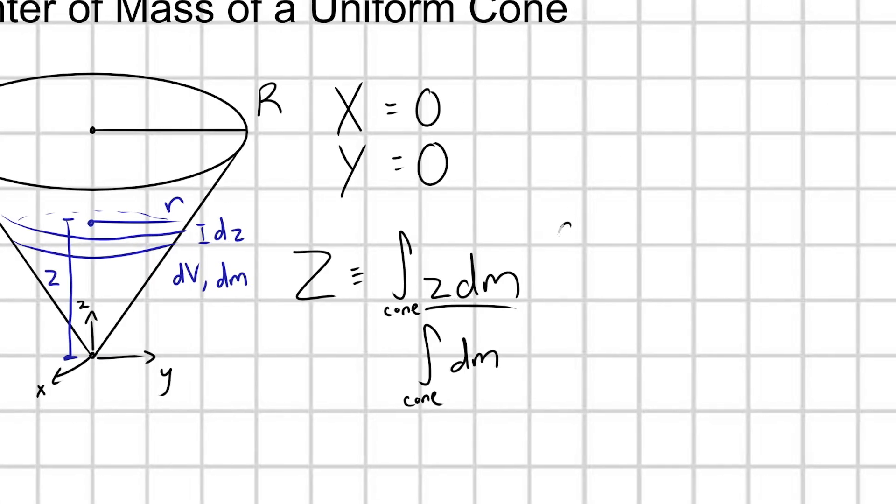We have that dm is going to be equal to, well, how do you find the mass of an infinitesimal mass element? You take your volume density rho times the infinitesimal volume that each of your mass elements is going to occupy. So you take your mass density times that volume to give you your infinitesimal mass.